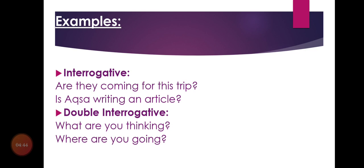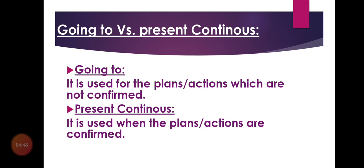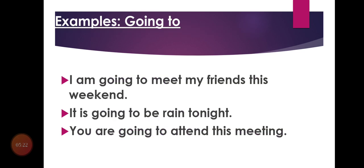Now here is what you were waiting for: going to versus present continuous. We use going to when a plan or action is not confirmed. We make plans, but some are confirmed and some are not. For example, 'I am going to meet my friends this weekend' — this means I am thinking and making a plan, but I am not sure about the place or the time, so it is not confirmed.